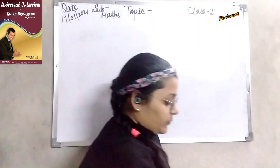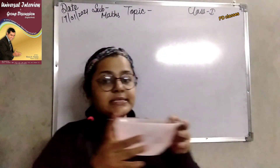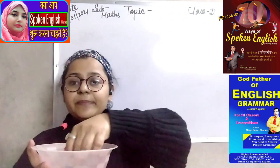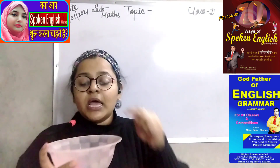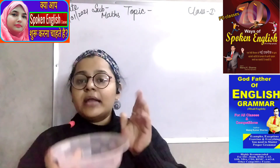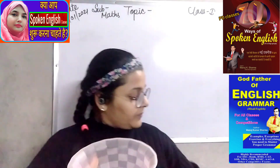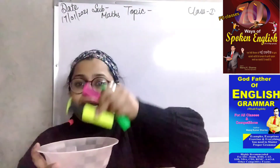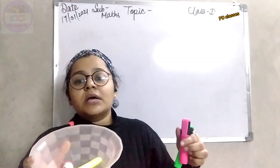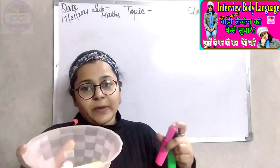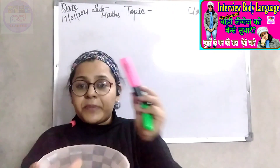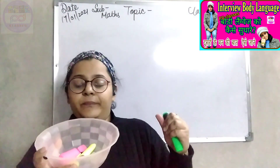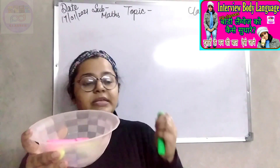Now, this is a bowl. If I keep these ink bottles in the bowl, the ink bottles are inside the bowl. If I put this yellow marker in the bowl, the yellow pen is inside the bowl. If I put this pink pen in the bowl, the pink pen is inside the bowl.